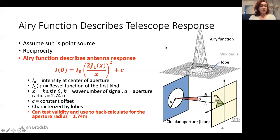Since we're going to use a telescope, let's just review some basic antenna physics. First, we assume that our source, in this case the sun, is a point source. And then we can use the fact that antennas follow reciprocity, which means that they act the same whether they are transmitting or receiving data.